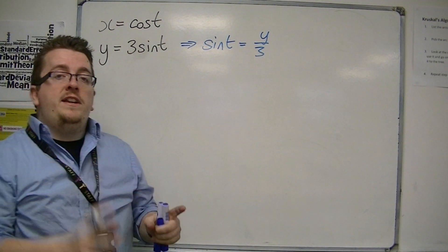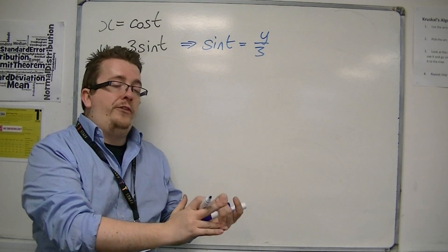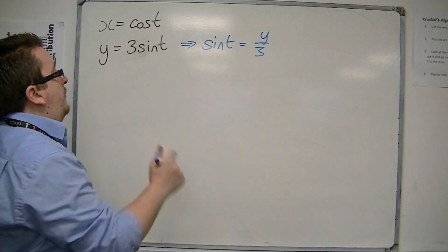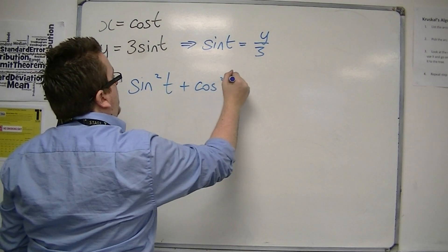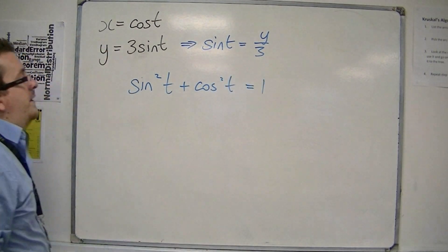Now, an equation that I know that includes sine and cosine is sine squared plus cosine squared equals 1, the trig identity.